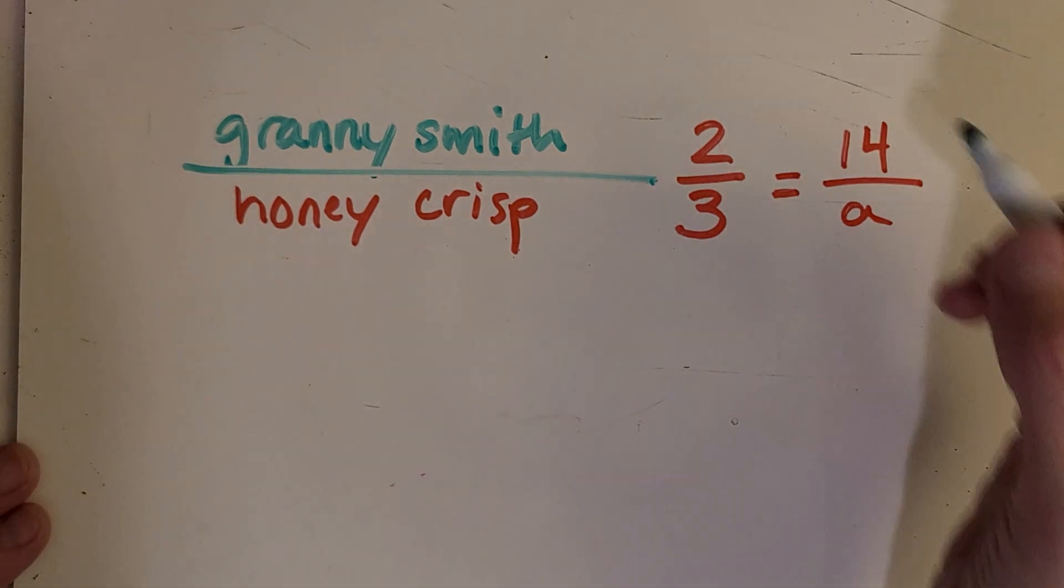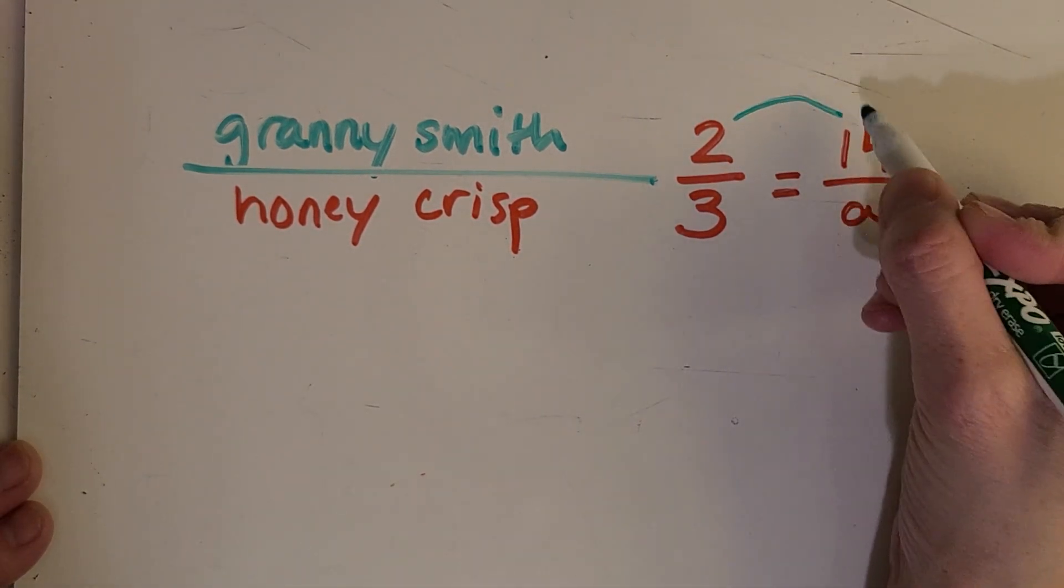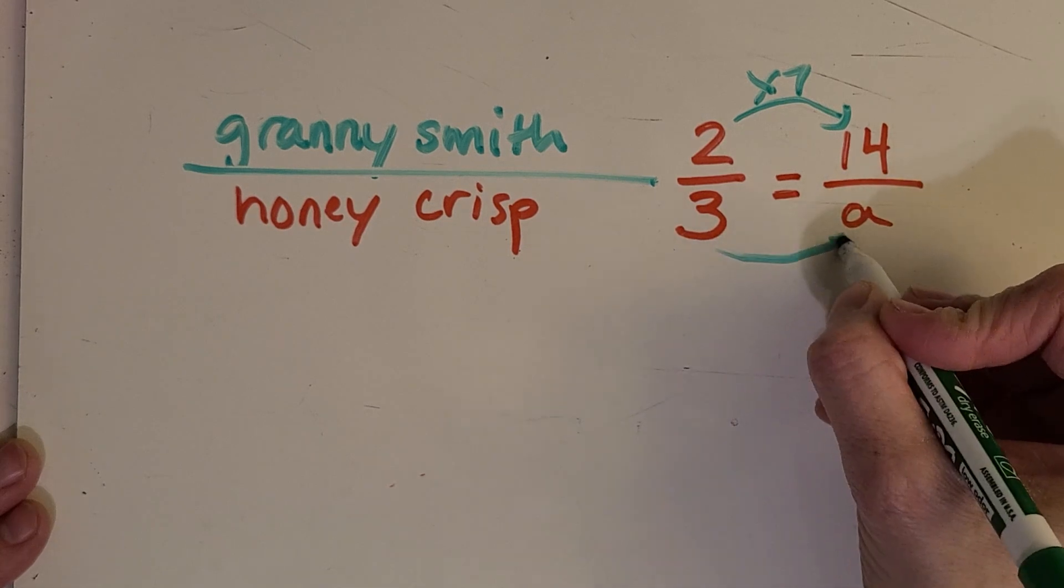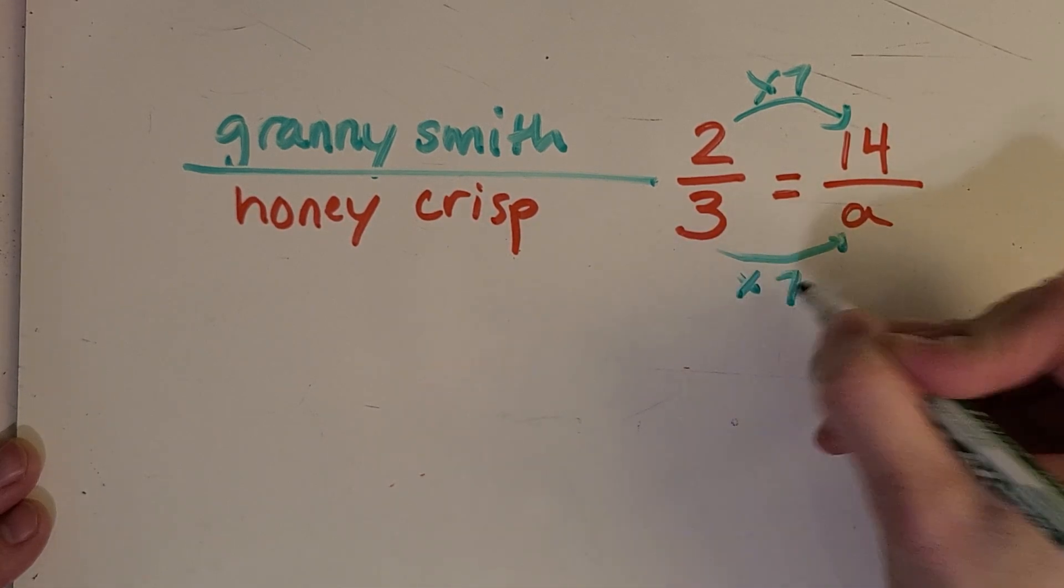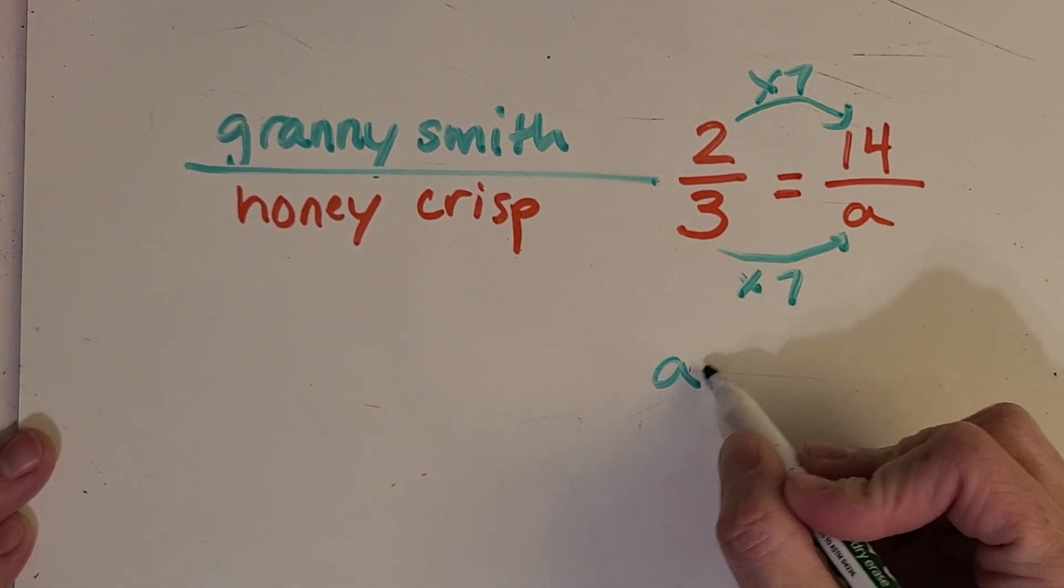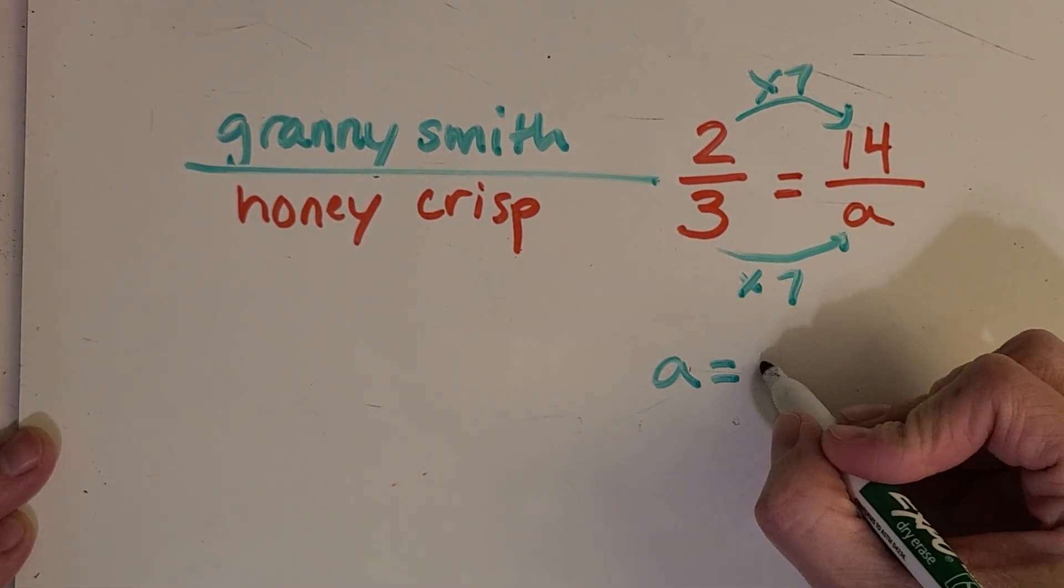Okay, let's check your work. So you probably looked for a pattern first. 2 times 7 is 14. So I'm going to do that to the Honeycrisp apples also. And then that means A equals, yep, you got it, 21.